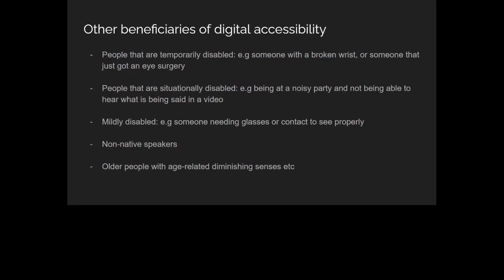There is also a category called speech impairments — people who are not able to properly form speech. One way this affects them is when using voice commands like Google Assistant: they may be unable to form the word correctly, so the voice command doesn't work. You want to create alternatives — if voice command doesn't work, they should be able to type what they want to say. Imagine wanting to buy bread but being unable to say the word properly and ending up buying the wrong thing. Give them the option of typing so they can use your product easily.